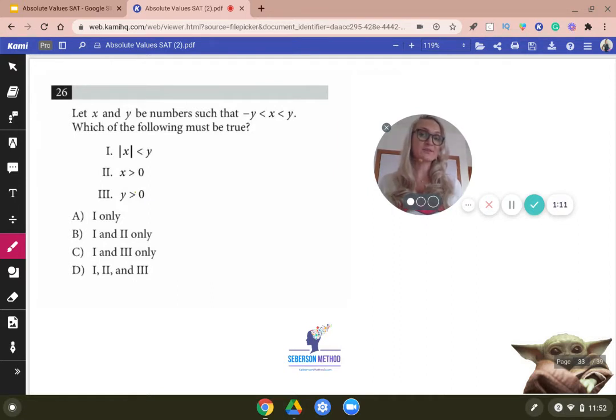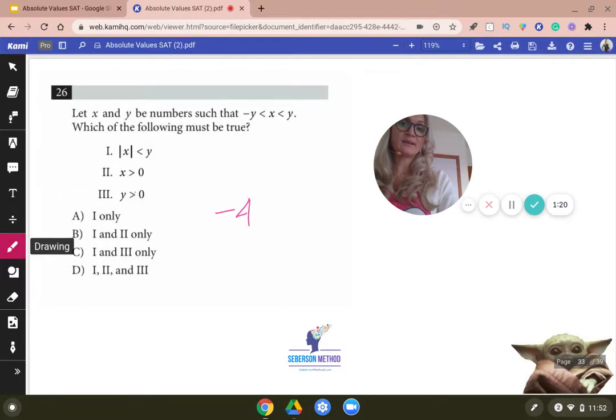So let's create a first possibility where Y would be four and X would be two. So we have negative four is less than two and then two is less than four. Works. Absolute value of X is less than Y. Absolute value of two is less than Y. It checks out. Then X is a positive number, checks out. Y is a positive number, checks out.